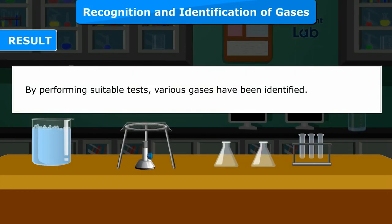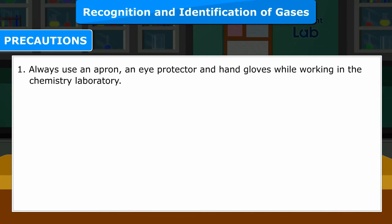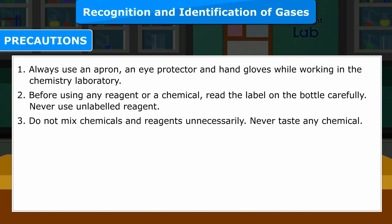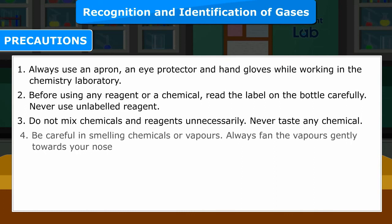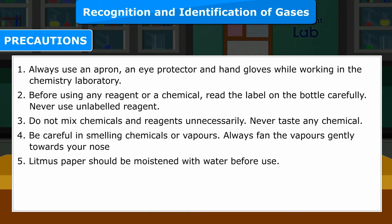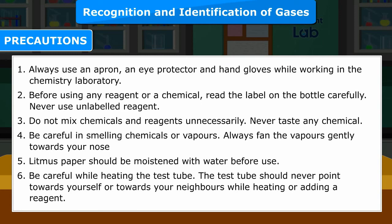Result: By performing suitable tests, various gases have been identified. Precautions: 1. Always use an apron, eye protector, and hand gloves in the chemistry laboratory. 2. Before using any reagent, read the label carefully — never use unlabeled reagents. 3. Do not mix chemicals unnecessarily; never taste any chemical. 4. Be careful smelling chemicals — always fan vapors gently towards your nose. 5. Litmus paper should be moistened with water before use. 6. Never point a test tube towards yourself or others while heating.